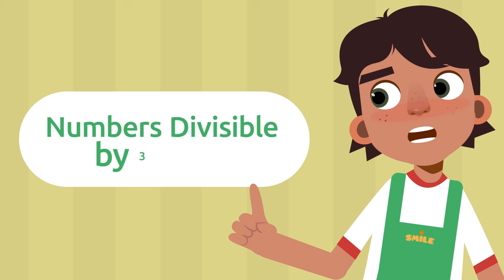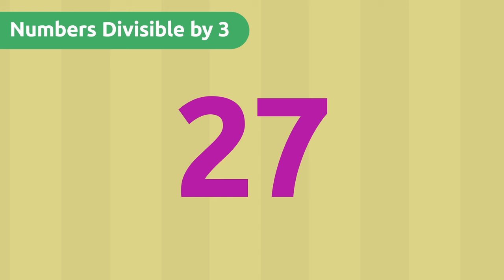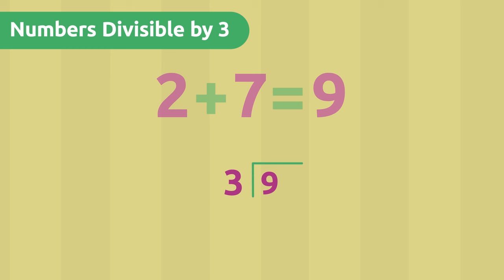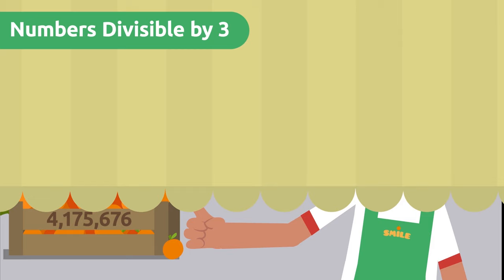Numbers divisible by 3. I want to put 3 oranges in each box. To find out if the number can be divided by 3, there's a neat trick! We have to add up all the digits, and if the result is divisible by 3, then the original number is also divisible by 3. Let's see what happens with all the oranges we have.